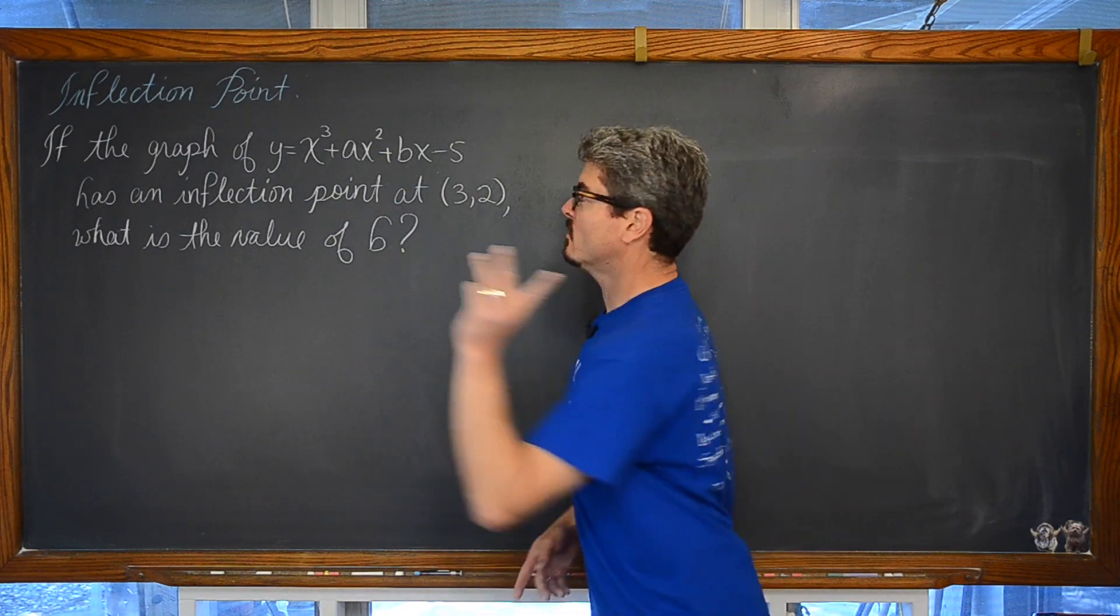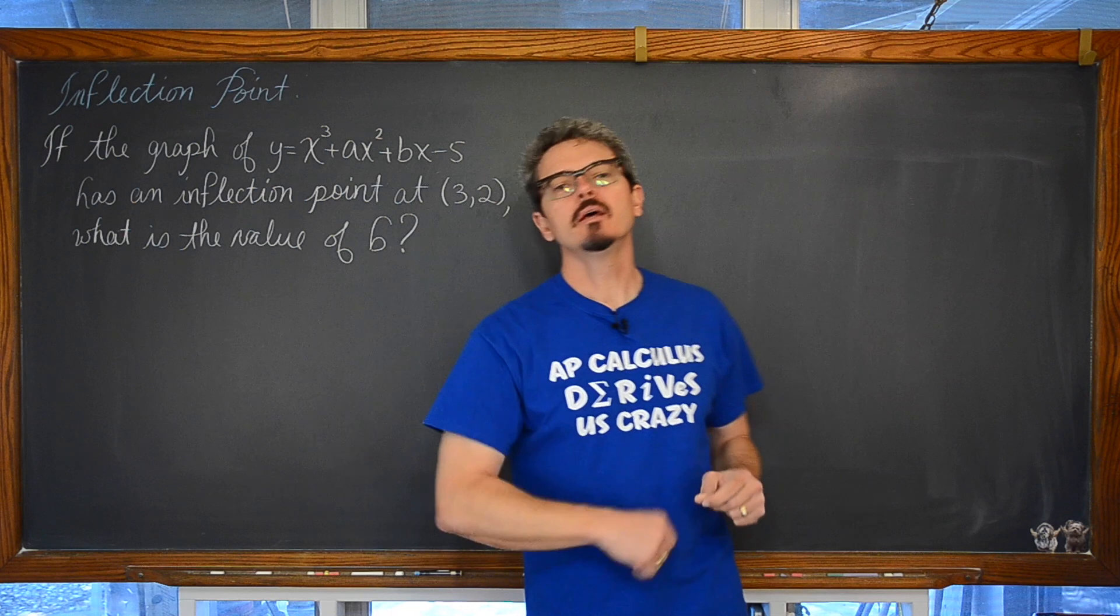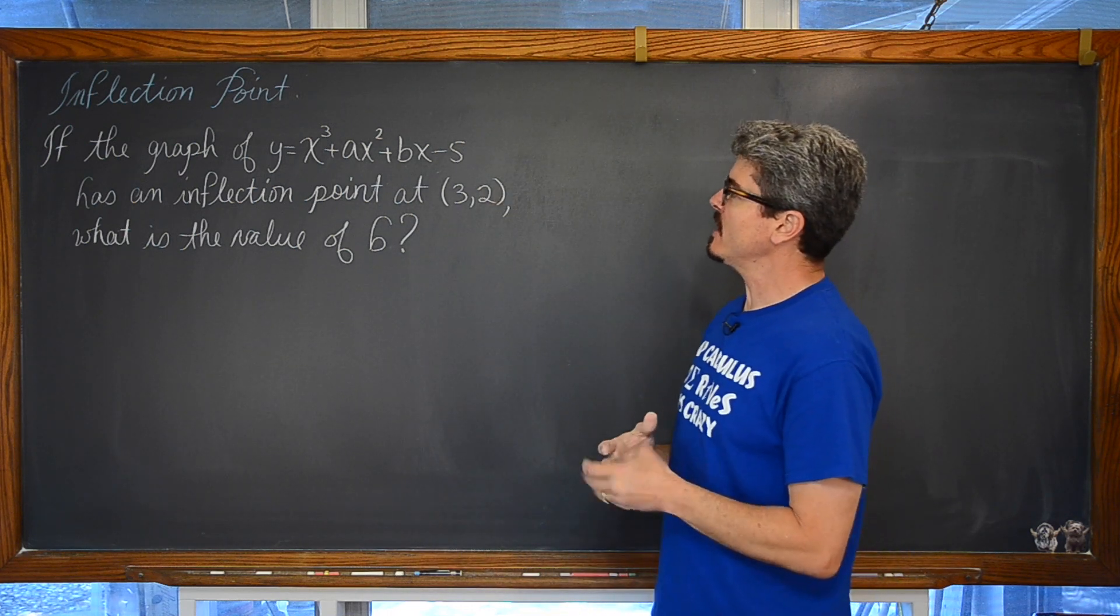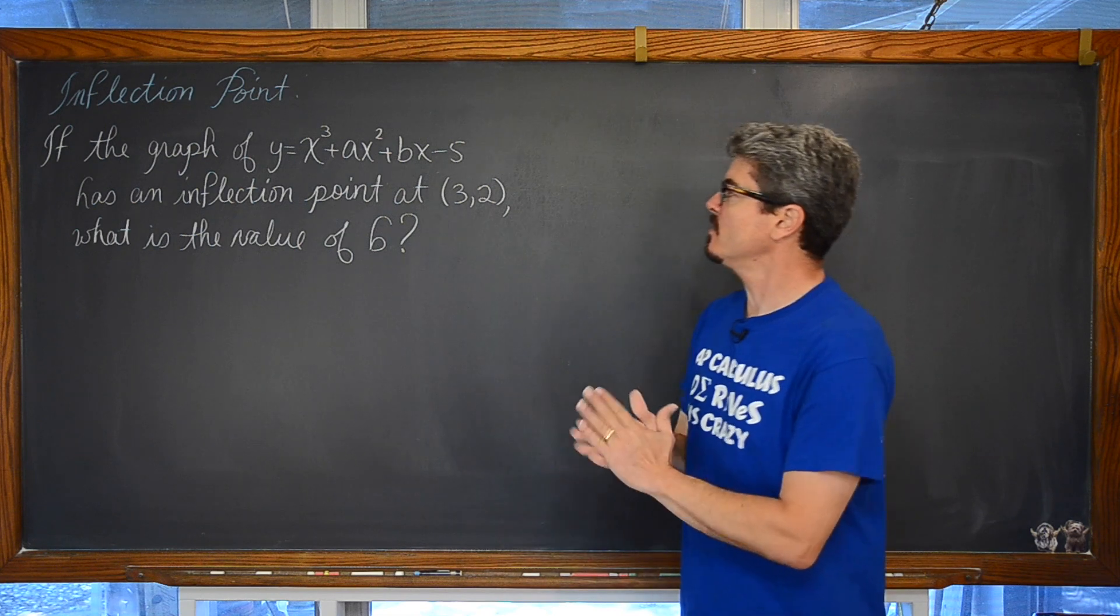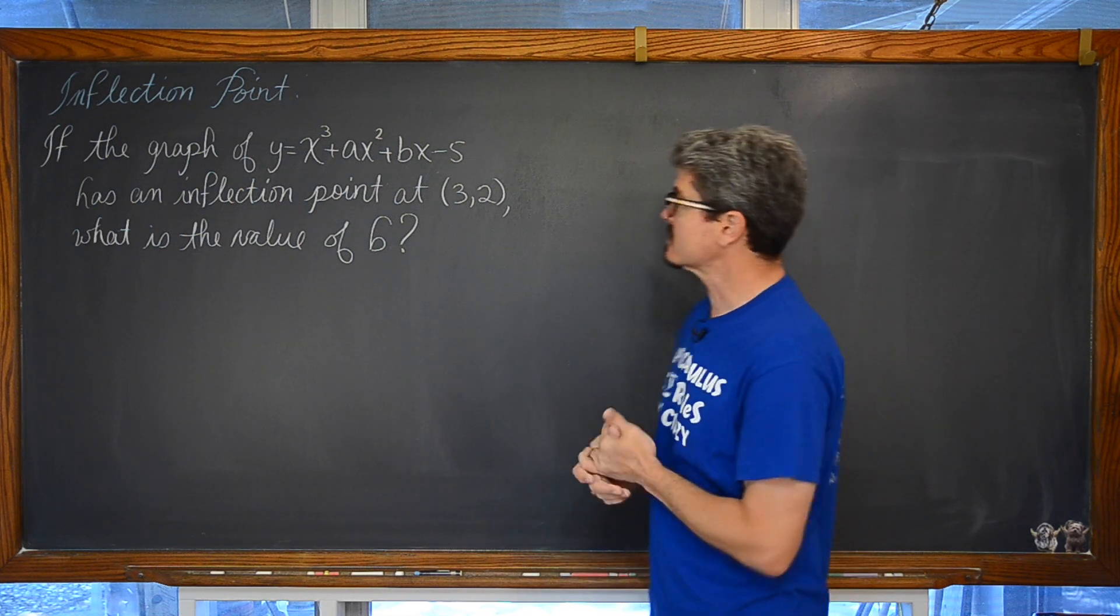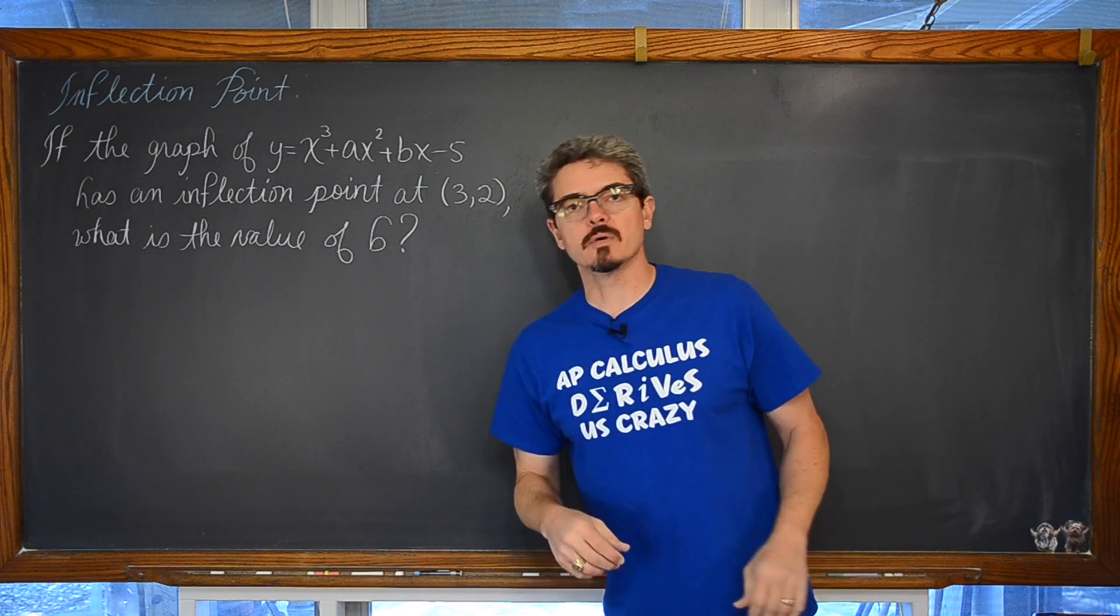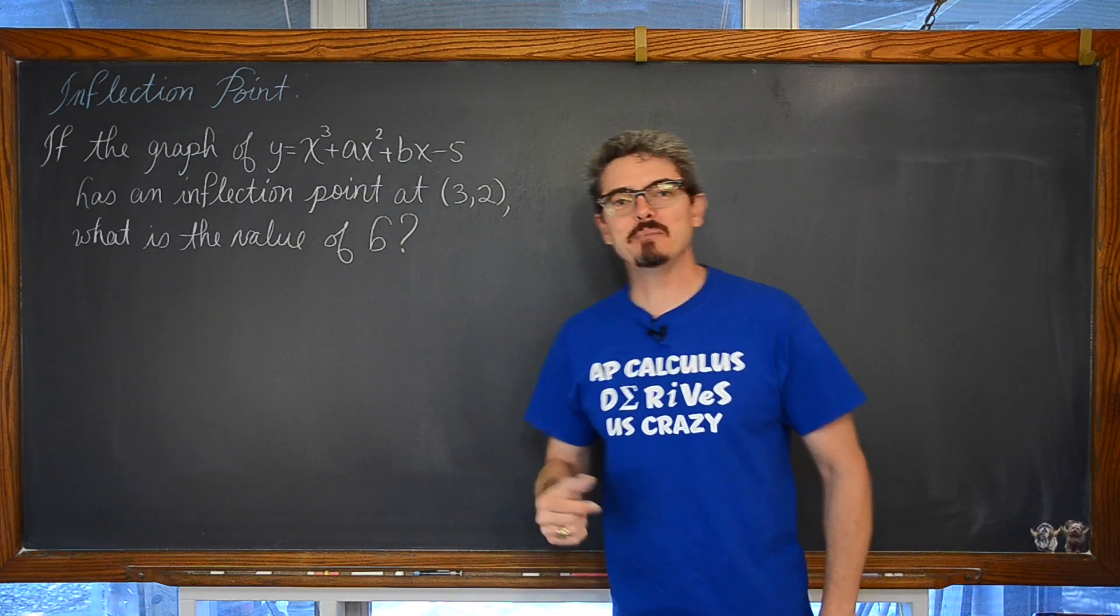BAM! In this calculus video we're going to work with inflection points. We have a problem that says if the graph of y equals x cubed plus ax squared plus bx minus 5 has an inflection point at the point (3,2), what is the value of b?